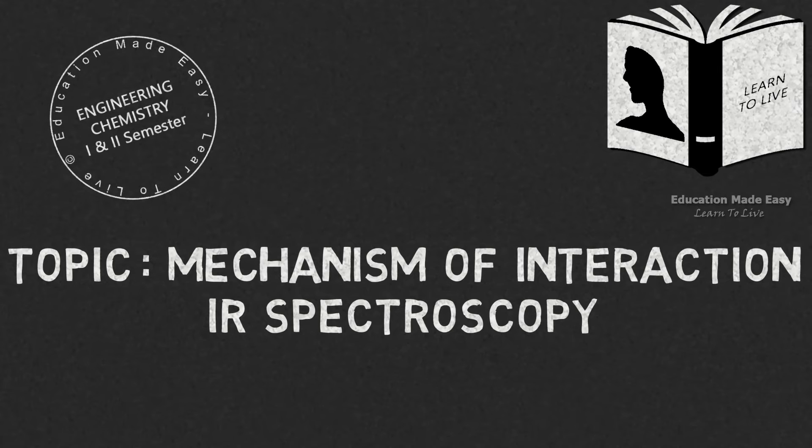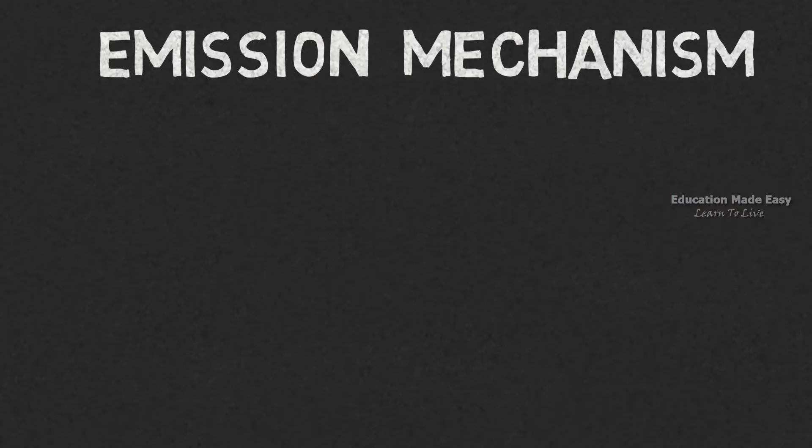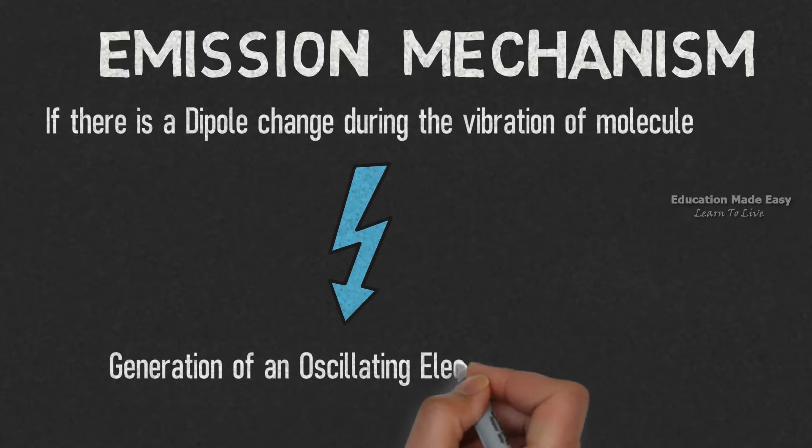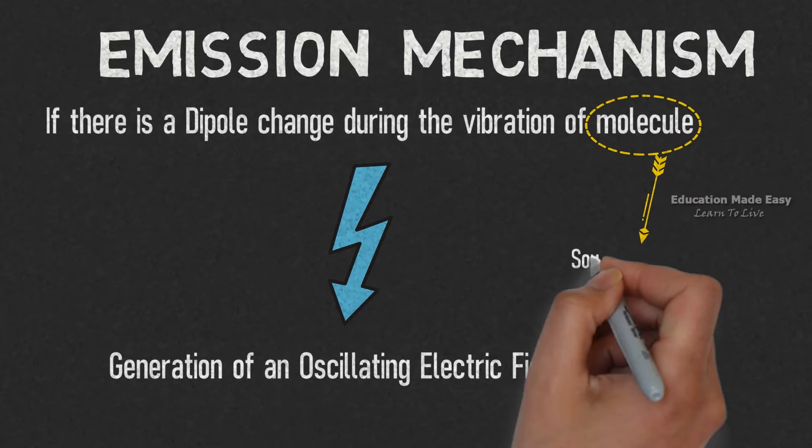Let us first learn about emission mechanism. If there is a dipole change during the vibration of a molecule, it will result in the generation of an oscillating electric field. The molecule responsible for this will be acting as a source of electromagnetic radiation.